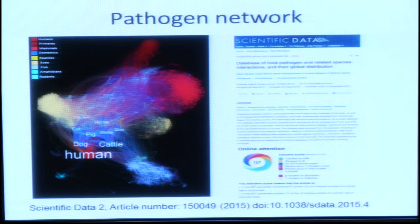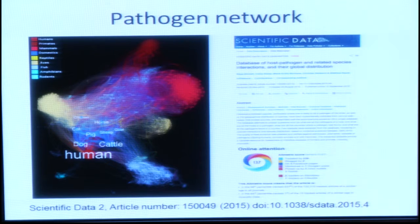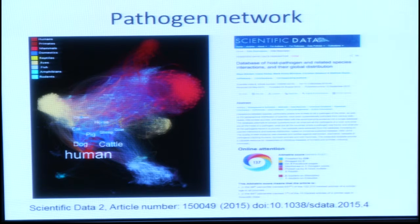We put all this together into a database and published some of the data sets recently in a scientific data paper. One of the things that occurred to us once we had these data is that we can begin to think about how we are connected to other animals through pathogens — very similar to some of the work that Bill was talking about. What you're seeing here is thousands of tiny dots. Each one is a species, and the size of the dot indicates how many pathogens are known from it. Lines connect organisms when they share pathogens, and the thicker the line, the more pathogens are shared.